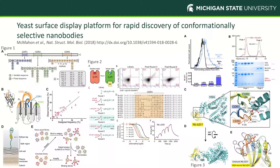Hello everybody, my name is Sam Schmidt. Today I'm going to be talking about eSurface, this paper: eSurface Display Platform for Rapid Discovery of Conformationally Selective Nanobodies. Nanobodies are camelid single domain antibody fragments, shown schematically here. One of the issues with them is that they come from camelids, which are large animals.